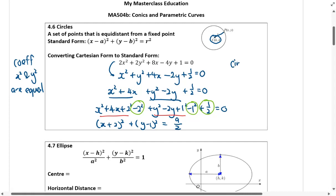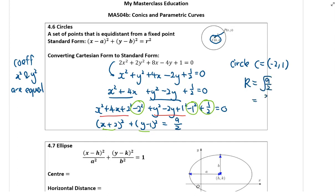What does this mean? This means that this is a circle with center at negative 2 comma 1. Just look at the brackets here, you'll get the center. The radius is equal to the square root of 9 over 2, keep it in surd form, 3 over square root 2 units.